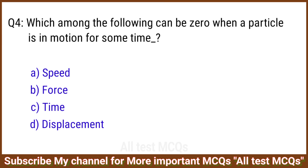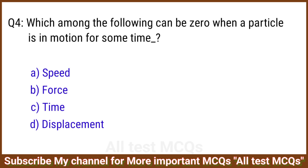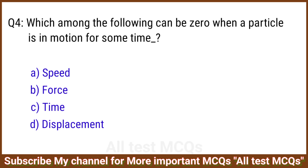Q4. Which among the following can be zero when a particle is in motion for some time? The correct answer is option D: Displacement.